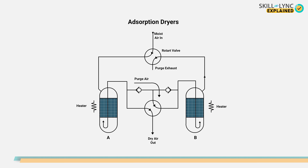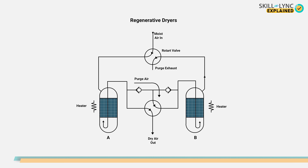By using two columns of such filters, continuous filtration can be achieved, where one column filters the moisture from the incoming air while the other column is heated to release the adsorbed moisture. Due to this property of reusability, adsorption dryers are also called regenerative dryers. Thus, the primary air treatment is completed.